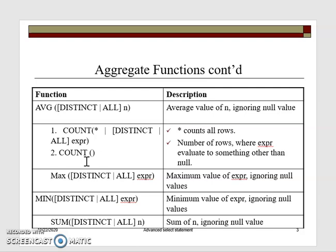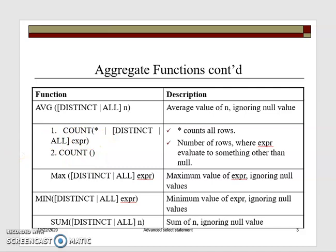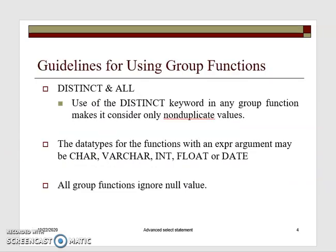When it comes to the count aggregate function, it depends on how you're using it. The first count will count all rows including those that have null values, whereas the second count will only count rows that have values in them. Maximum distinct will look at distinct rows and return the maximum, or you can do maximum all — the same applies to minimum and sum. Group functions ignore null values, except for the first count which also counts null values.